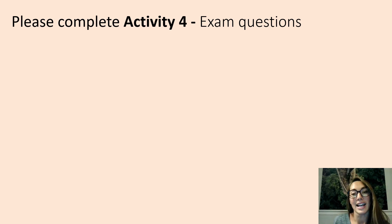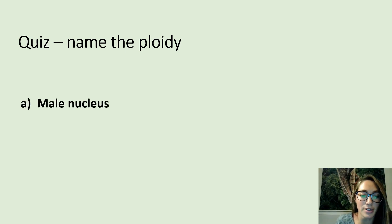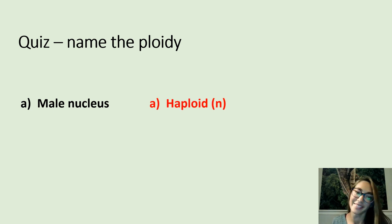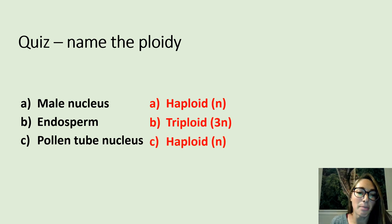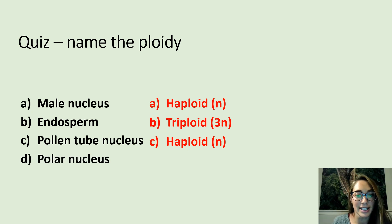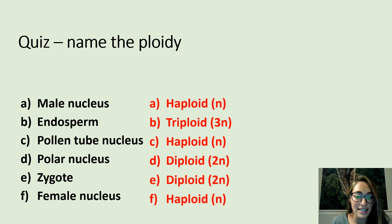Please pause and complete activity 4 — a short quiz on ploidy. Write down the n number or ploidy for the following: the male nucleus is haploid; the endosperm is triploid (3n); the pollen tube nucleus is haploid; the polar nucleus is diploid; the zygote is diploid; and the female nucleus is haploid.